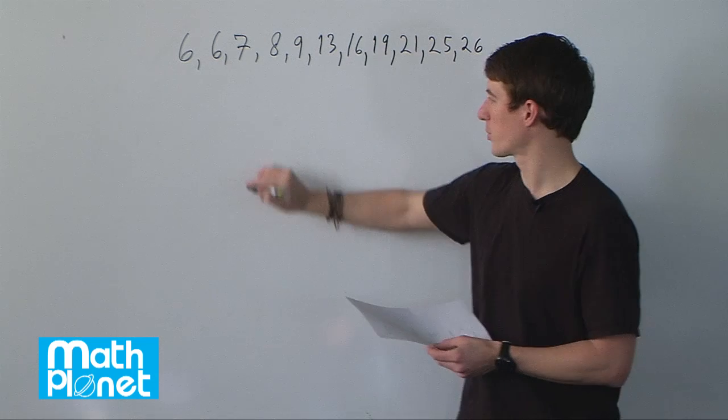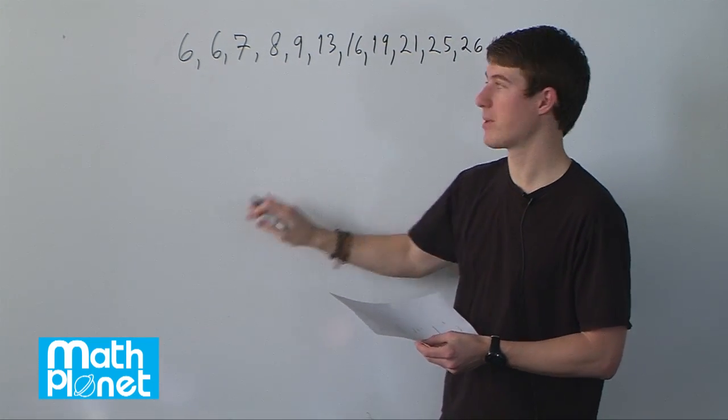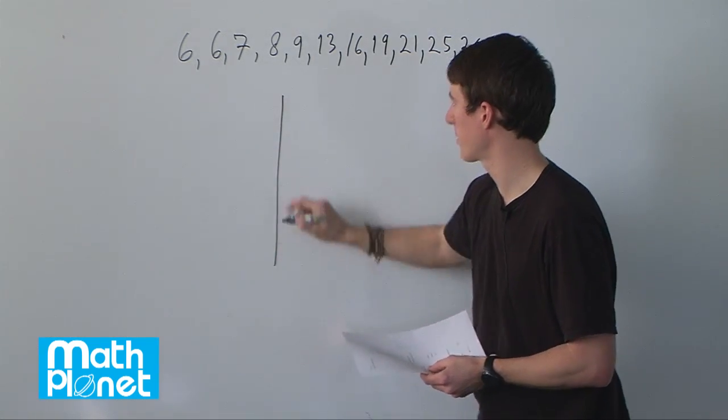All we need to do here is create a list starting with tens, that's going to be the stem, and then the leaves, the numbers after that. Let me just show you what I mean.